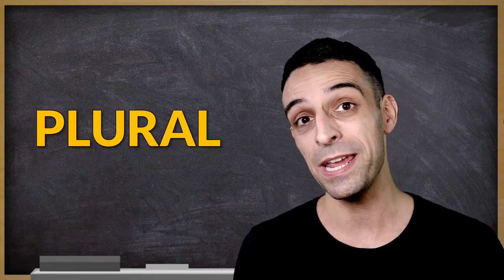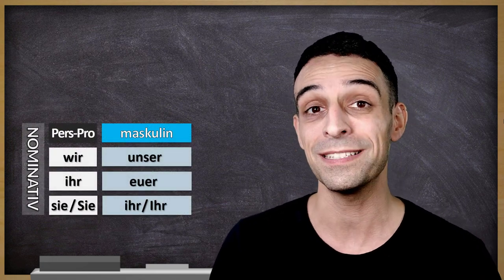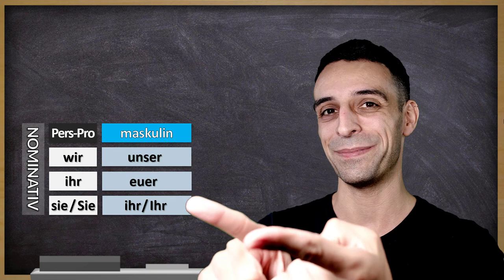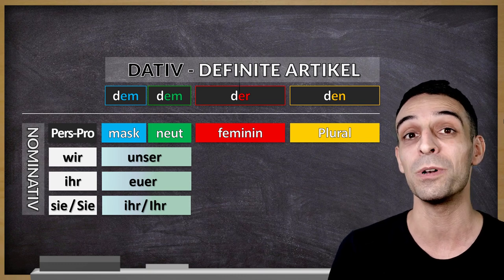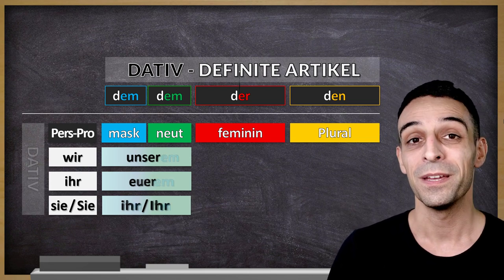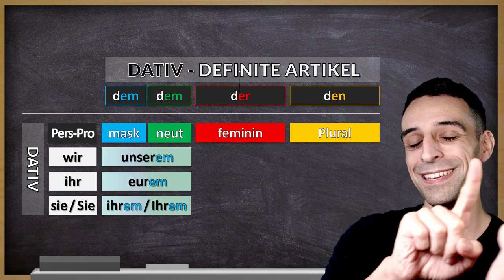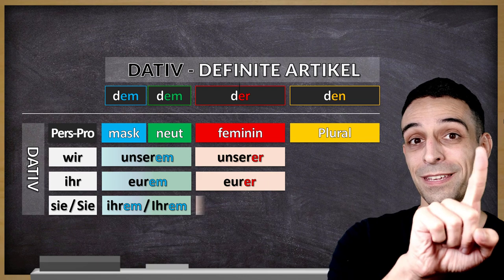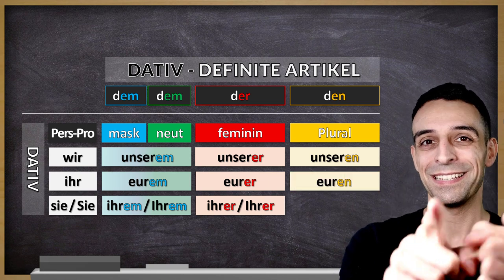Now I will explain plural the same way I did with singular. Here is the table of possessive articles in nominative case, masculine: unser, euer, ihr. On top I will show the definite articles in dative case, marking the endings — the last two letters. Masculine and neutral: unserem, eurem, ihrem. Feminine: unserer, eurer, ihrer. Plural: unseren, euren, ihren.